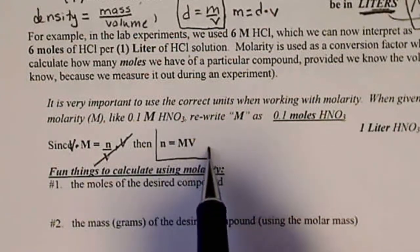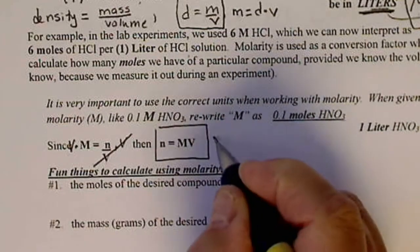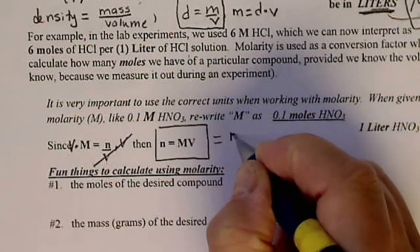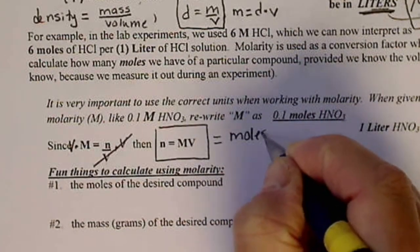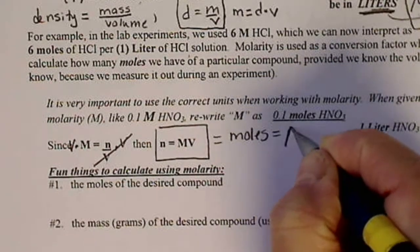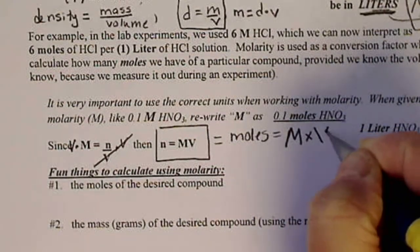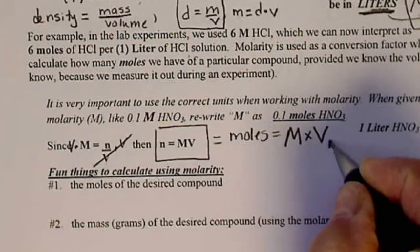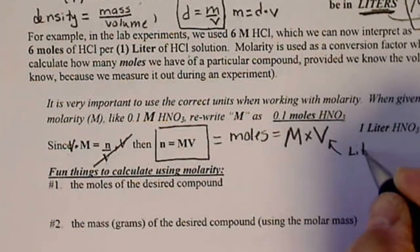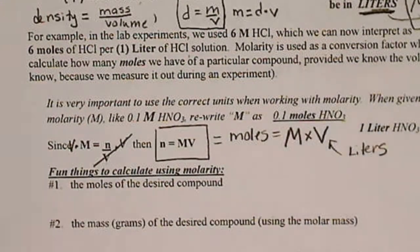So this is going to be our new way to find moles. So moles equals capital M times V. But we have to remember that the volume has to be in liters.